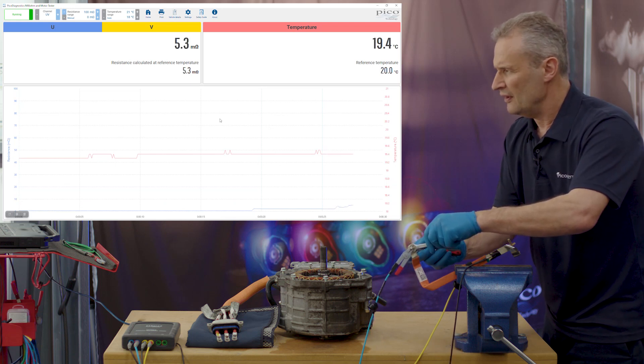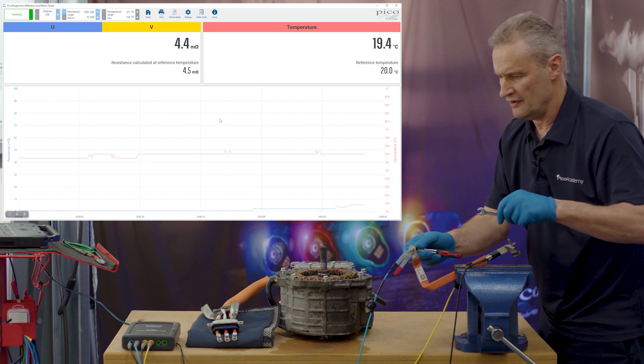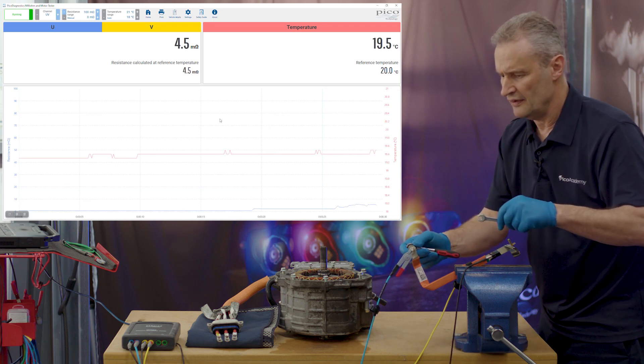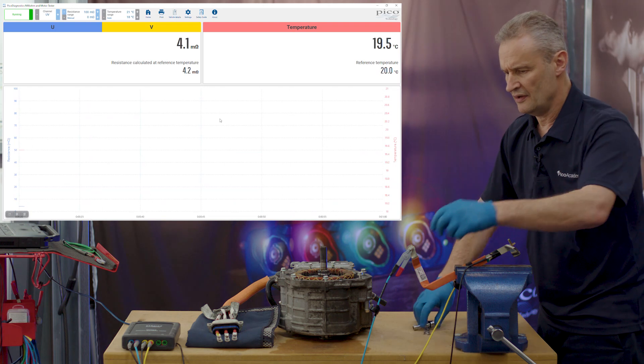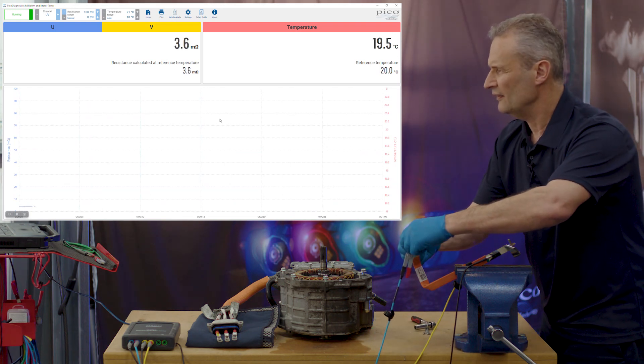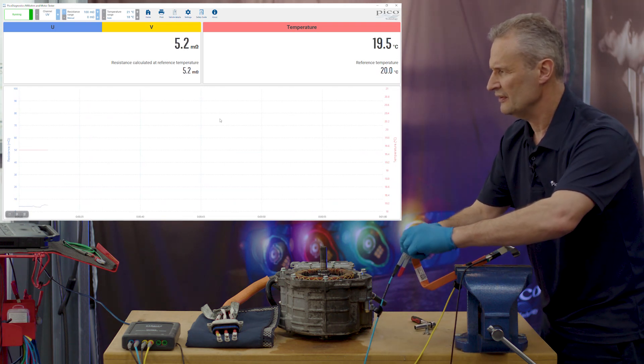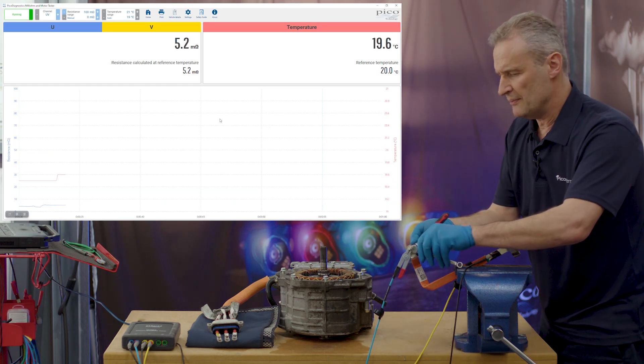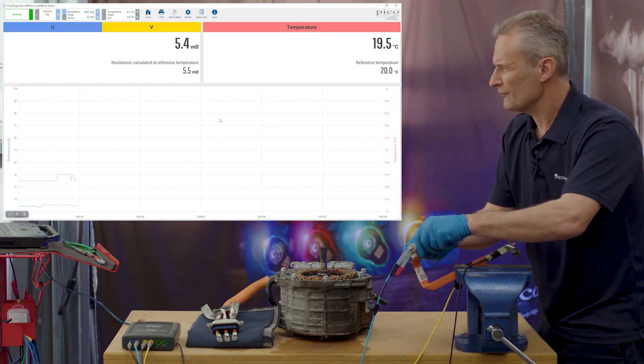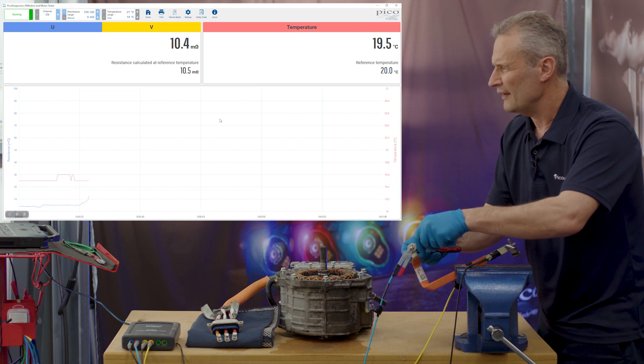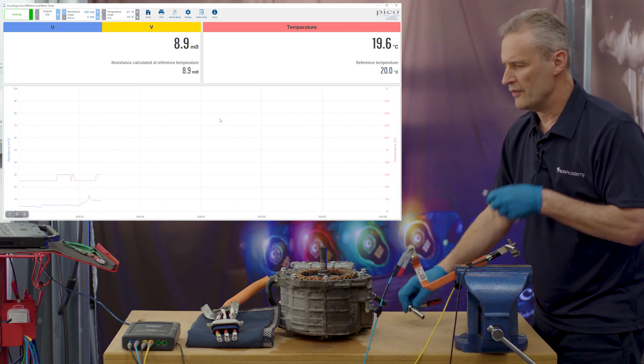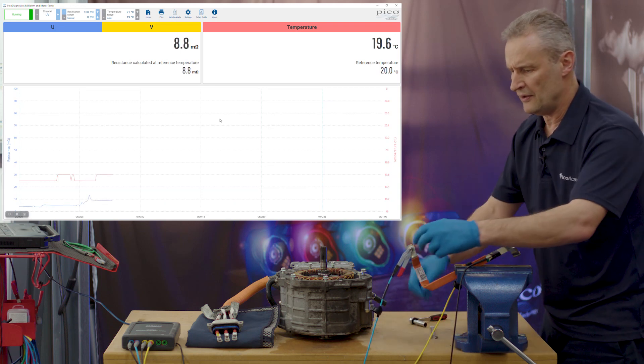You see how that is changing and it's still not... you can see actually the clip is just resetting. If I move that, we can see the resistance changing. Let me just come off a little bit more, and we're now up to... I think there was a point there where we went to 10 milli-ohm. So if you think about that, think about 100 amps passing through there.